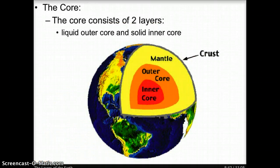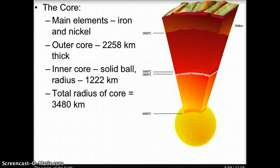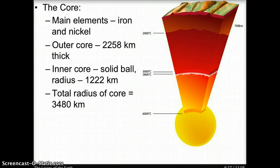The core of the Earth contains two layers: the liquid outer core and the solid inner core. The main elements of both are iron and nickel. The outer core is 2,258 kilometers thick, and the inner core is a solid ball with a radius of 1,222 kilometers. Together, their total radius is 3,480 kilometers. In the diagram, the outer core is represented by the yellow-orange color and the inner core by the yellow ball.